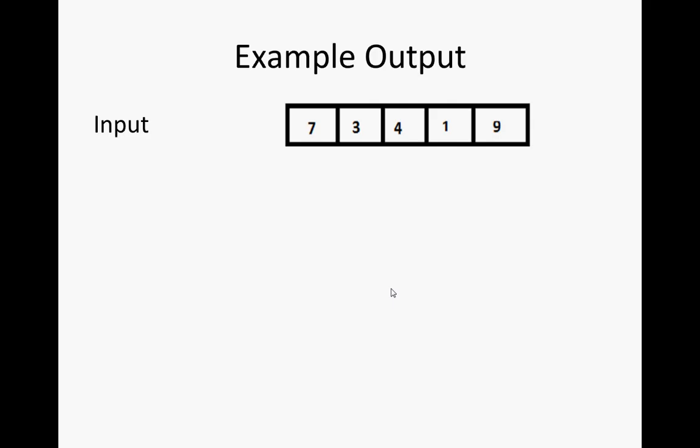Another example, we'll try Quick Select on 2. Here it goes through. It finds the third smallest element in the array, puts it in the second location, and then it puts stuff smaller than it on the left, and bigger than it on the right. Simple, right?